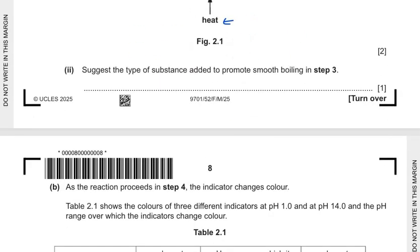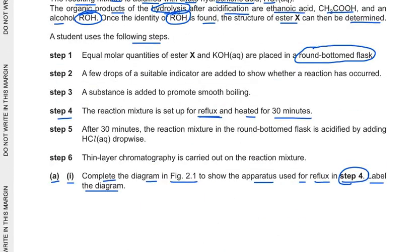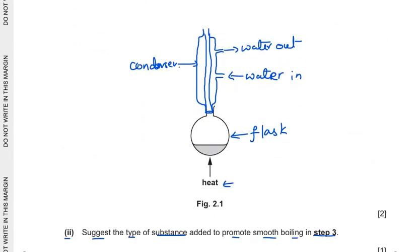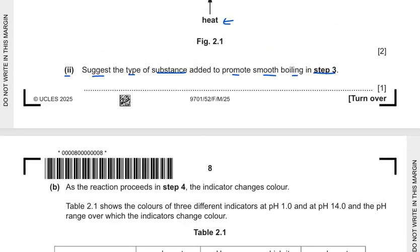So this is how we draw a labeled diagram. Now suggest the type of substance added to promote the smooth boiling in step 3. Now step 3 shows that a substance is added to promote smooth boiling. Now what can be added for smooth boiling means there should not be any bumping or the liquid inside or the solution inside should not spill out due to bumping. So we call those as anti-bumping granules. Now these are generally made of small glass beads which can be added to the mixture in the reaction in the flask.